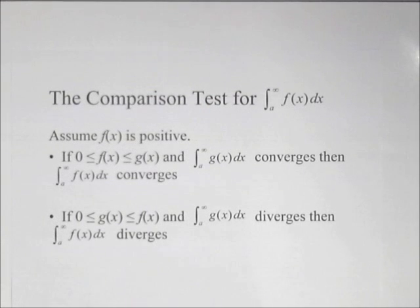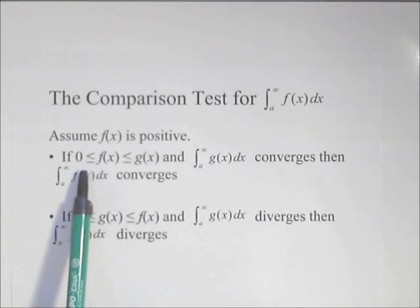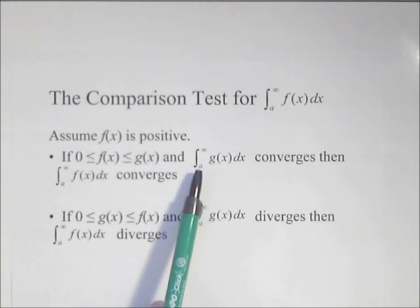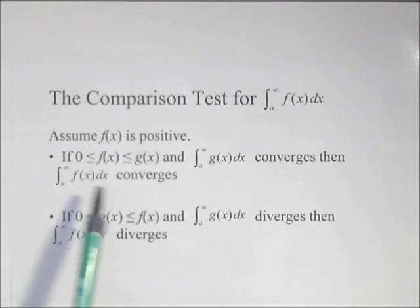First off, we're going to assume our function is positive. We do need that to be able to use the comparison test. And it says if f(x) is greater than zero but less than g(x), then the integral from a to infinity of g(x) converges. Then we can say that f(x) converges.